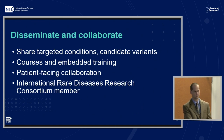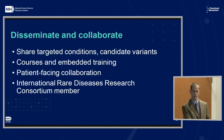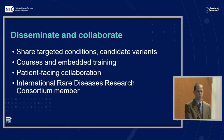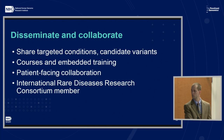For dissemination and collaboration, everything discussed is freely available. The CMGs also share on a pre-publication basis the phenotypes they'll be working on, so others with samples can see that. The candidate variants identified help others in the field. They offer courses on analysis and embedded training opportunities, have done patient-facing collaborations engaging support groups or social media, and are members of the International Rare Disease Research Consortium.